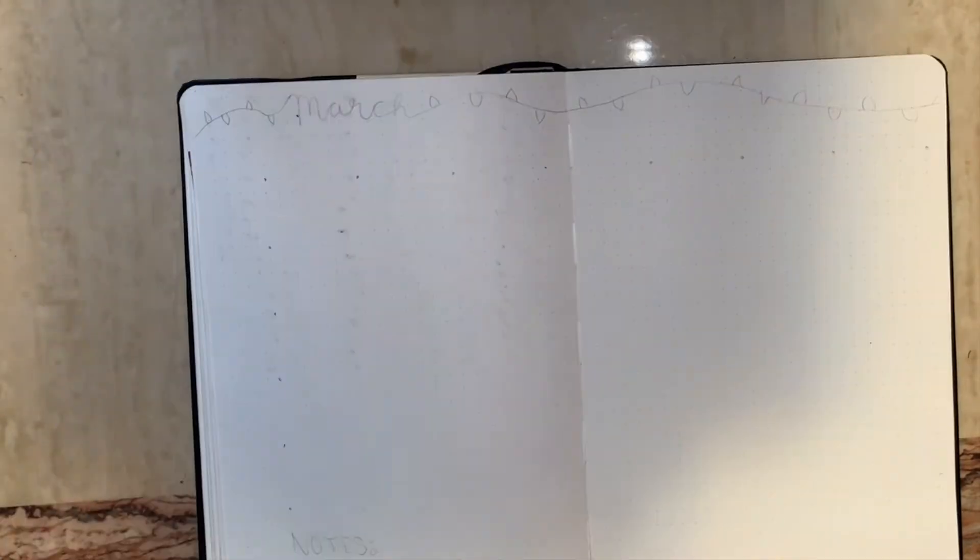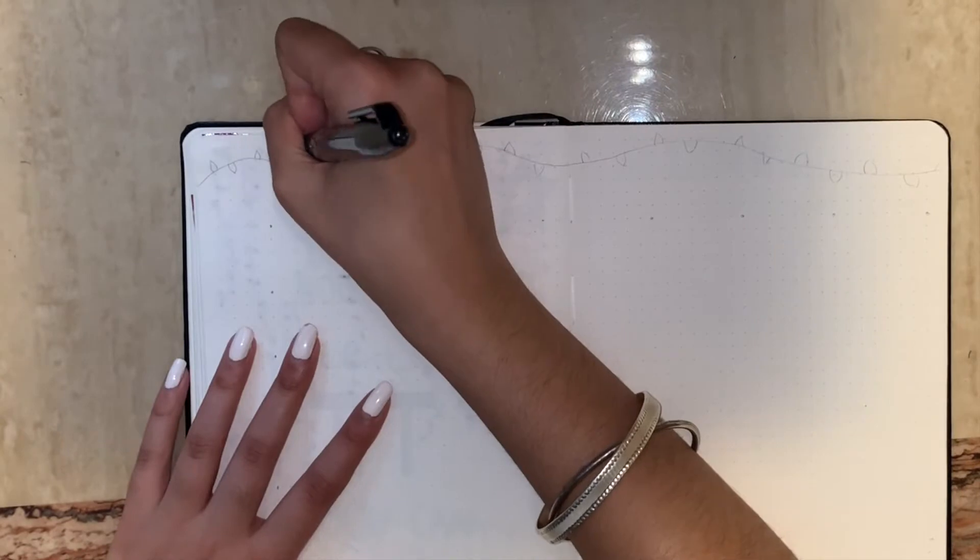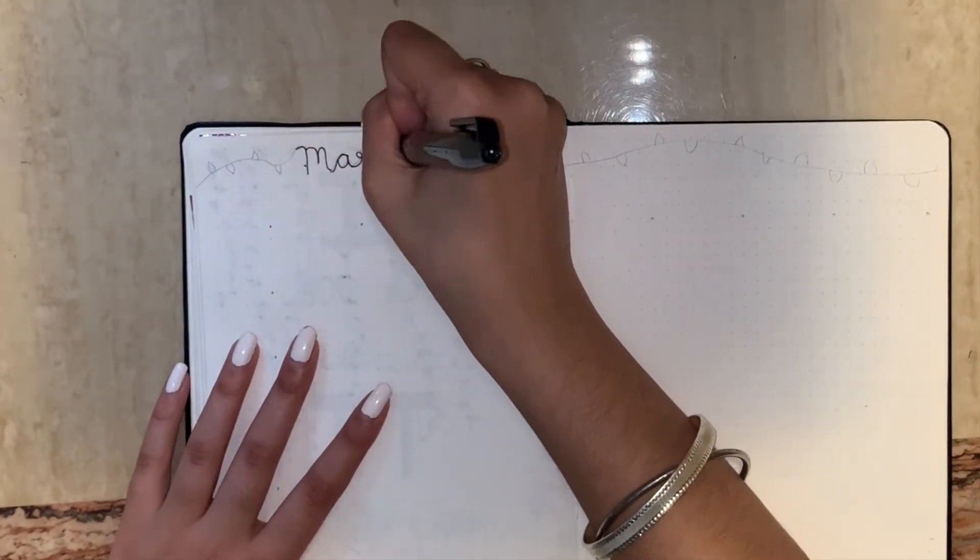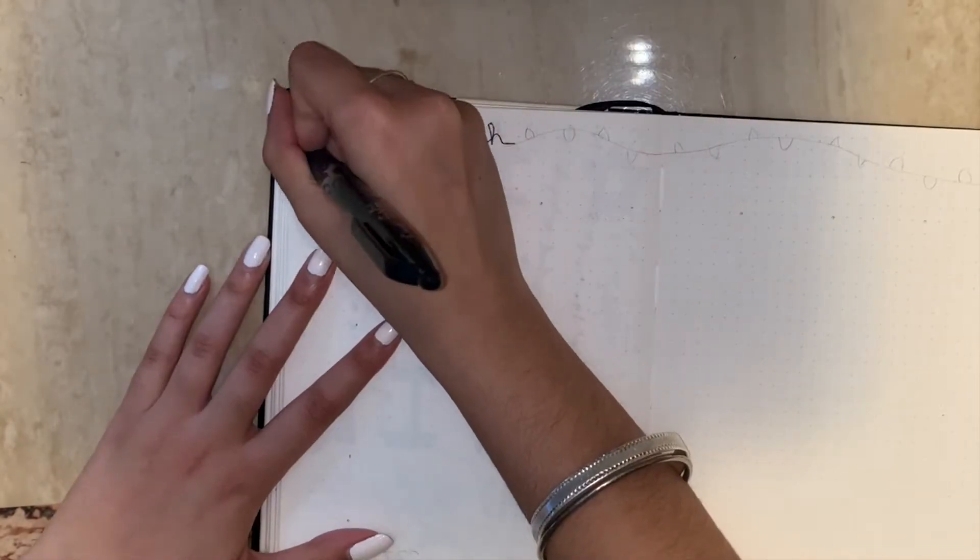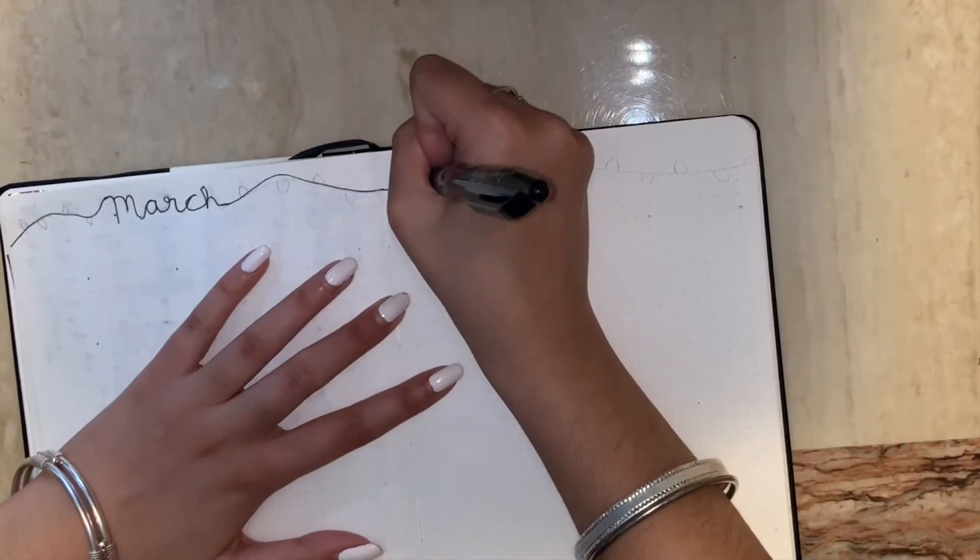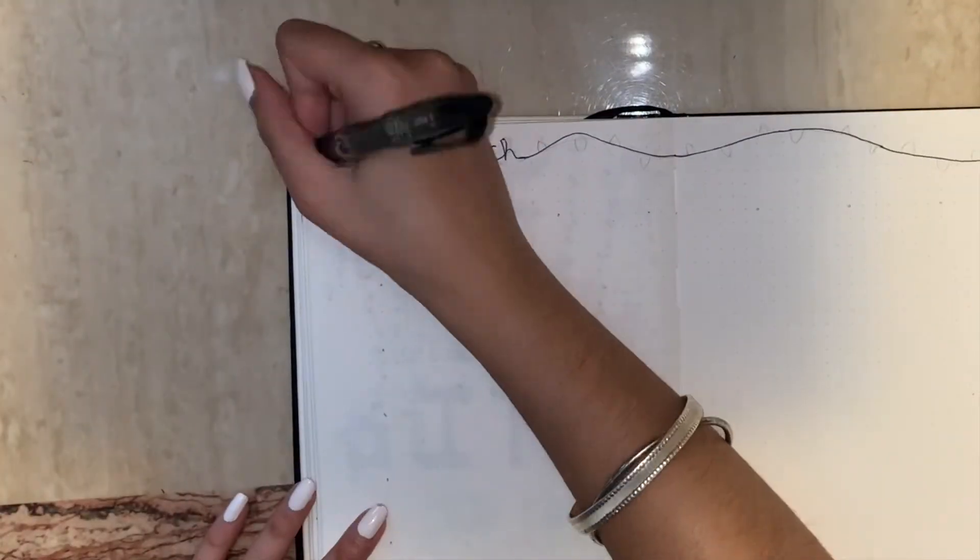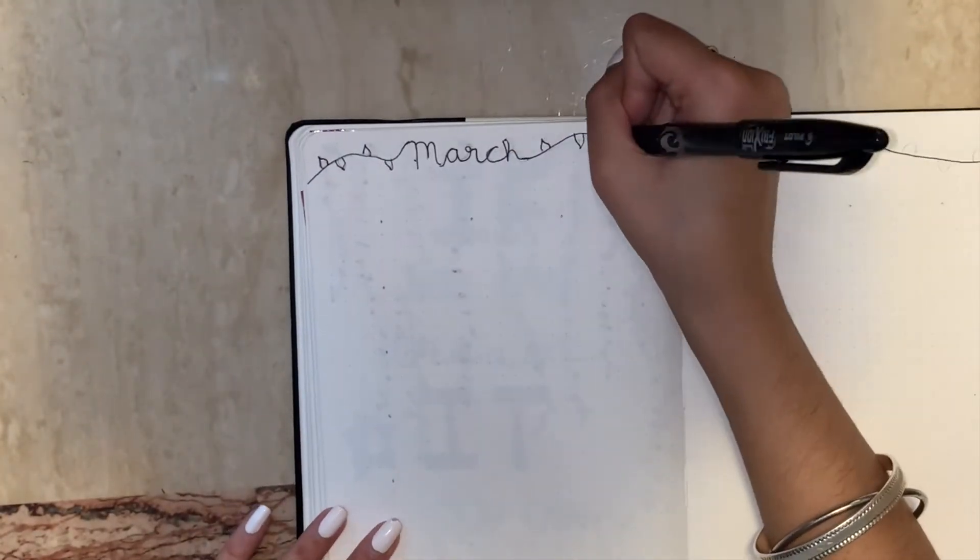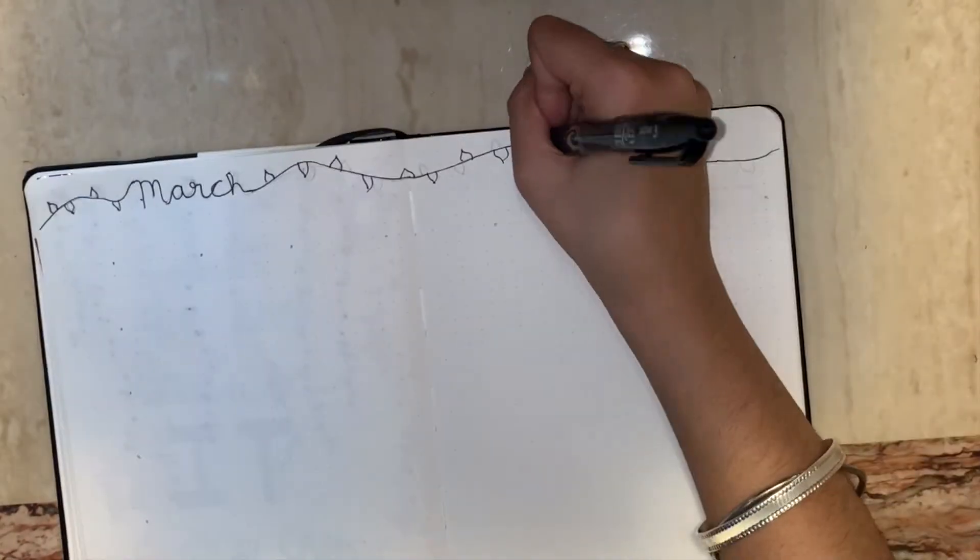So next I am doing my monthly page. I'm just writing March at the top and adding a little line around it, or beside it, and just basically sort of like the lines on the other page that I did.